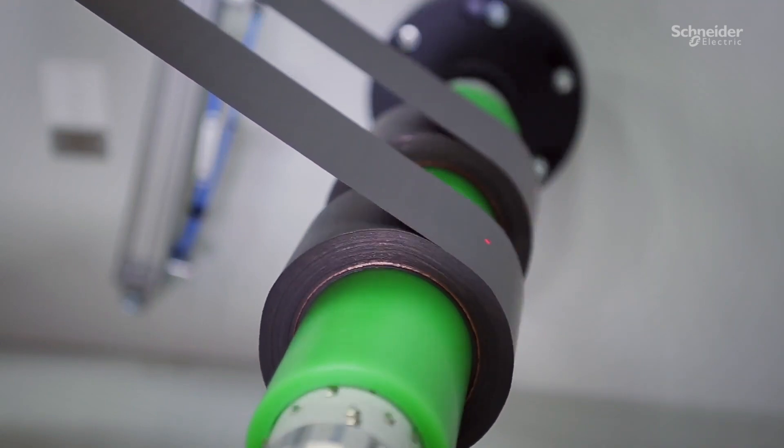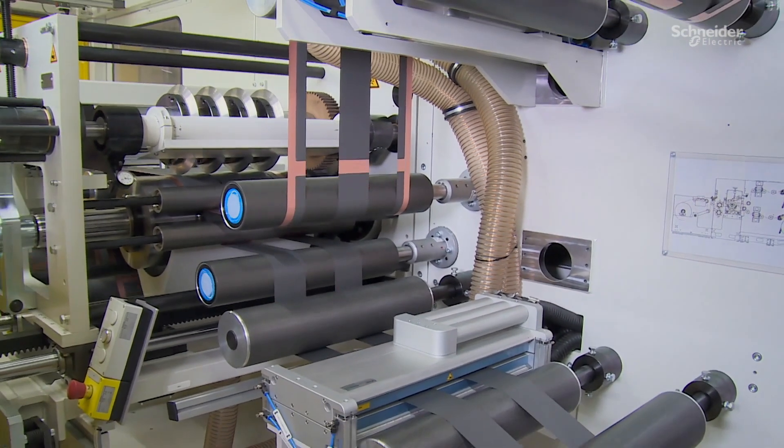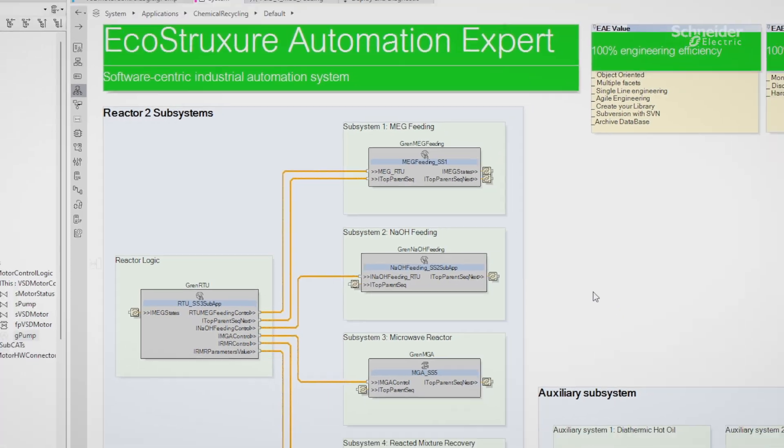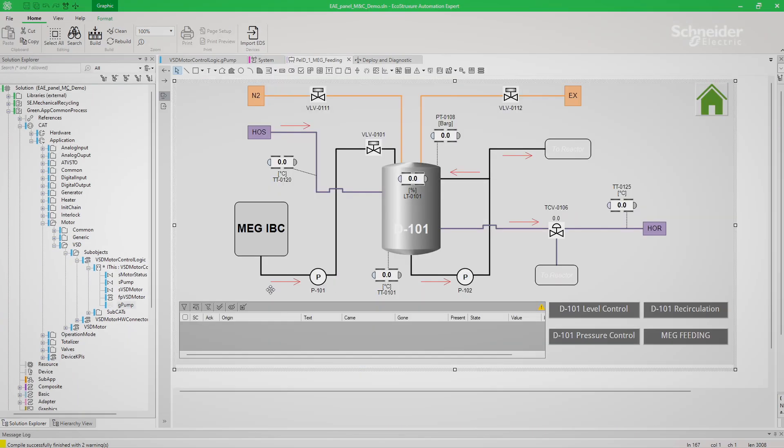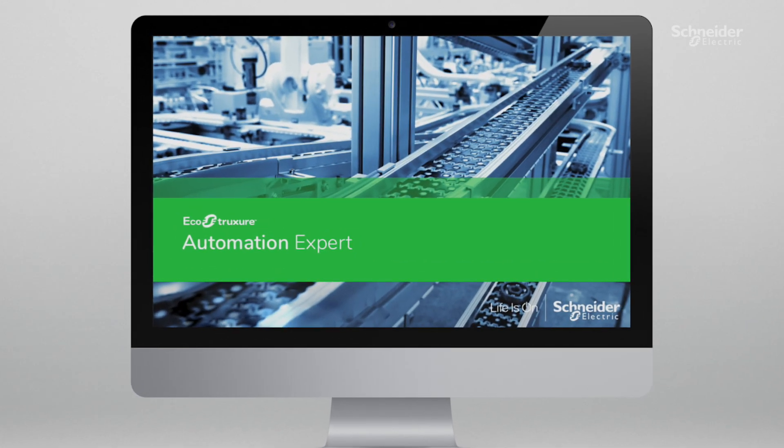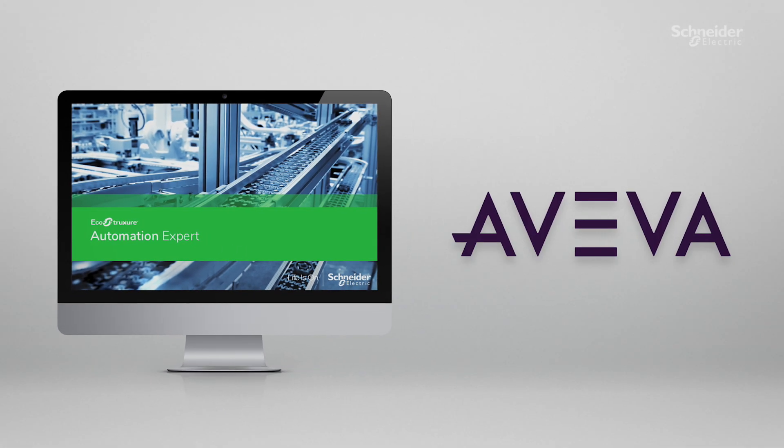Optimize manufacturing and enhance energy efficiency. Schneider Electric's building management system seamlessly integrates manufacturing and energy management systems utilizing digital transformation offers like EcoStruxure Automation Expert and Aviva System Platform.